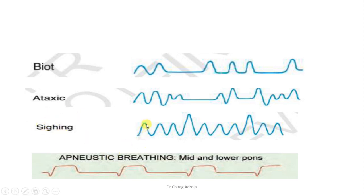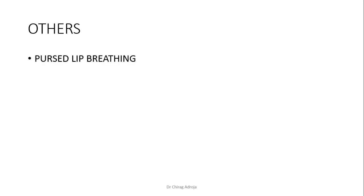Sighing breathing: patient has normal breathing and between breaths takes a deep inspiration — seen in nervous or depressive individuals who complain they cannot take a breath; every two to three cycles they take a deep inspiration and feel satisfied. Apneustic breathing is seen in mid and lower pontine injury — there is a pause between inspiration and expiration; the pause is about two to three seconds — also called gasping type of breathing.